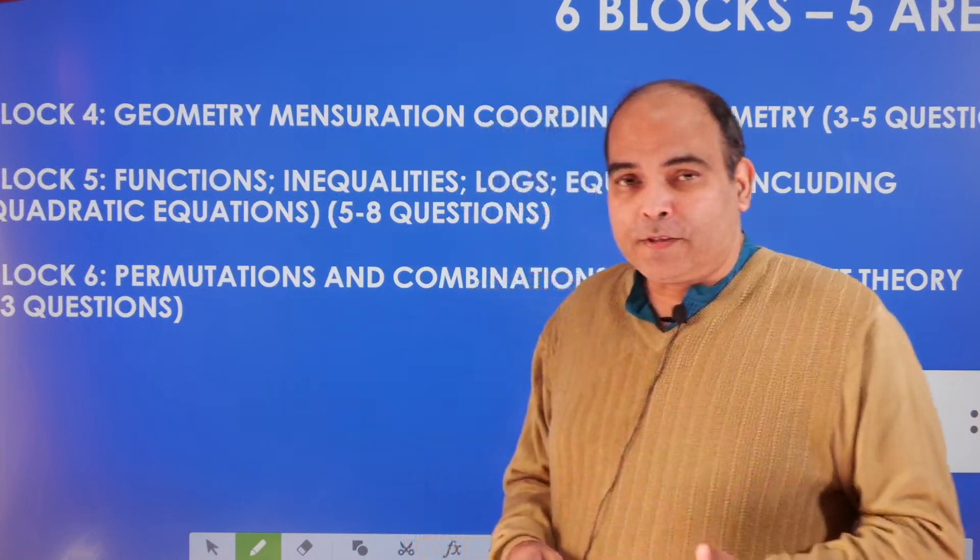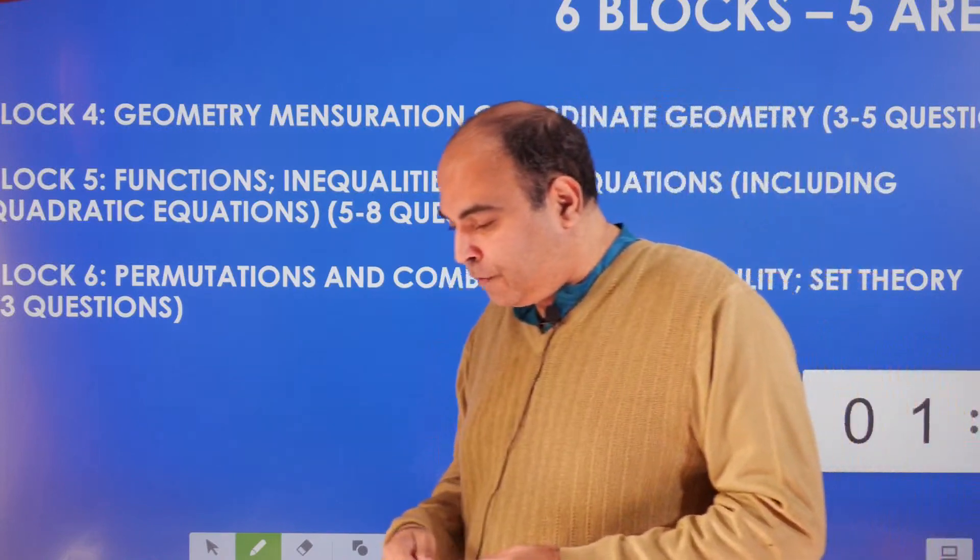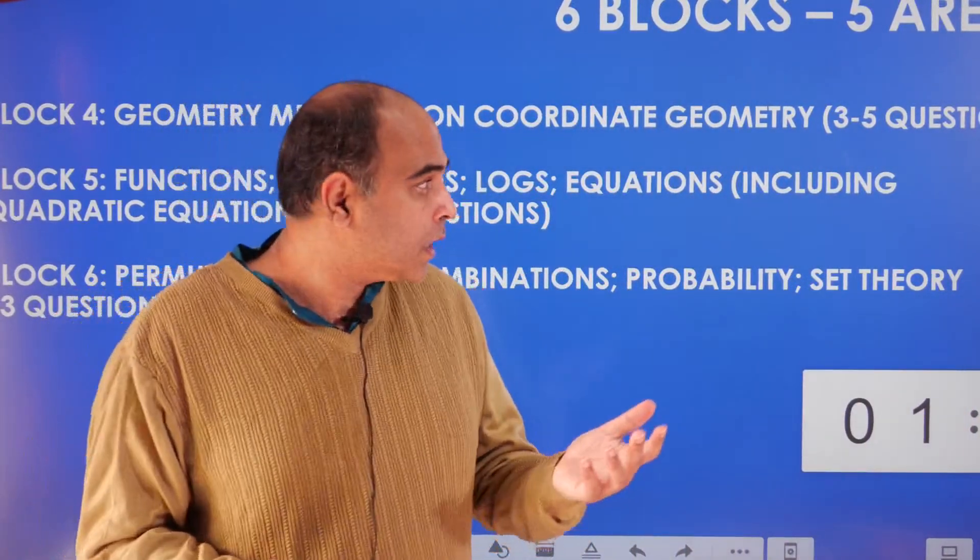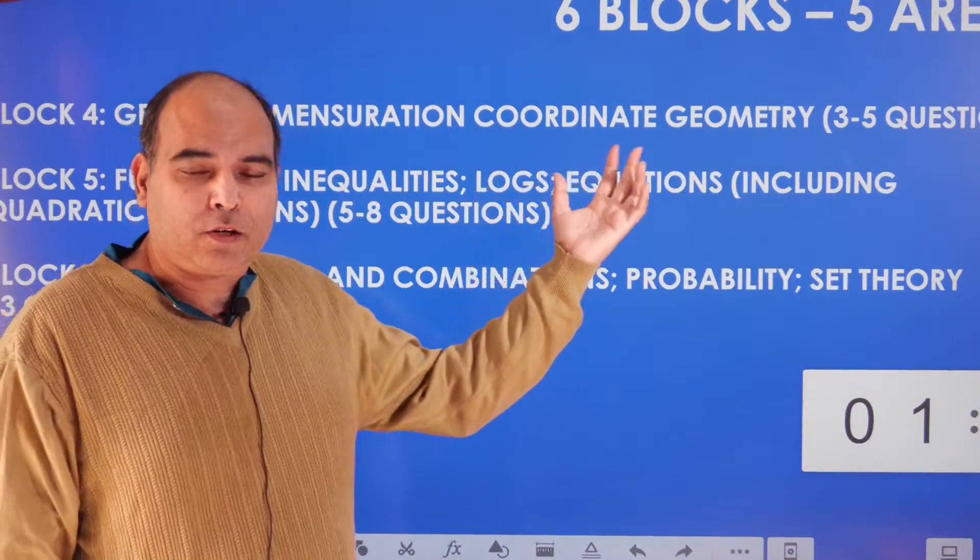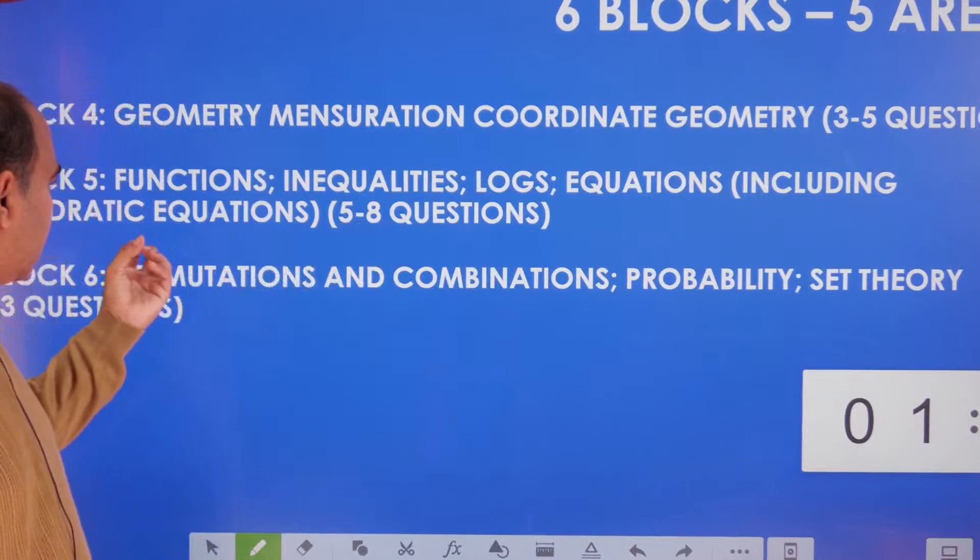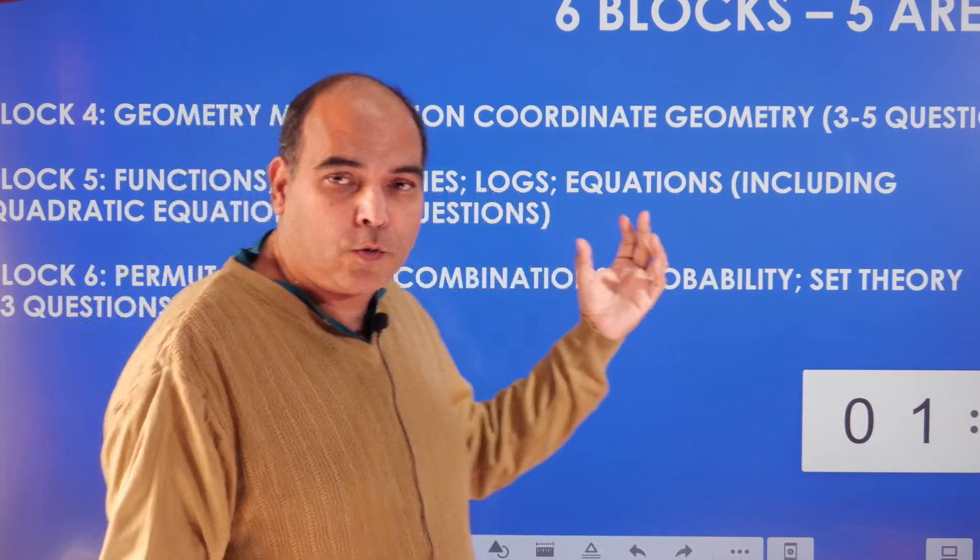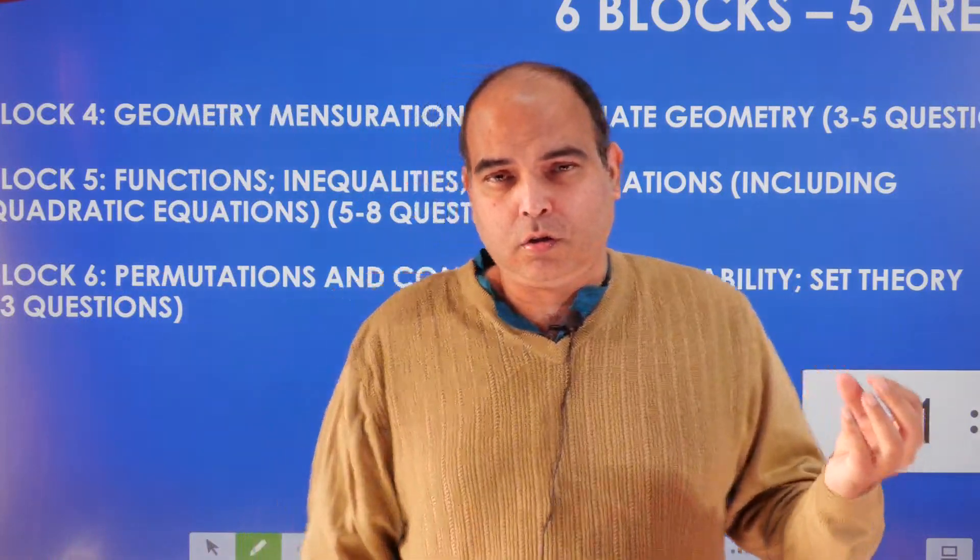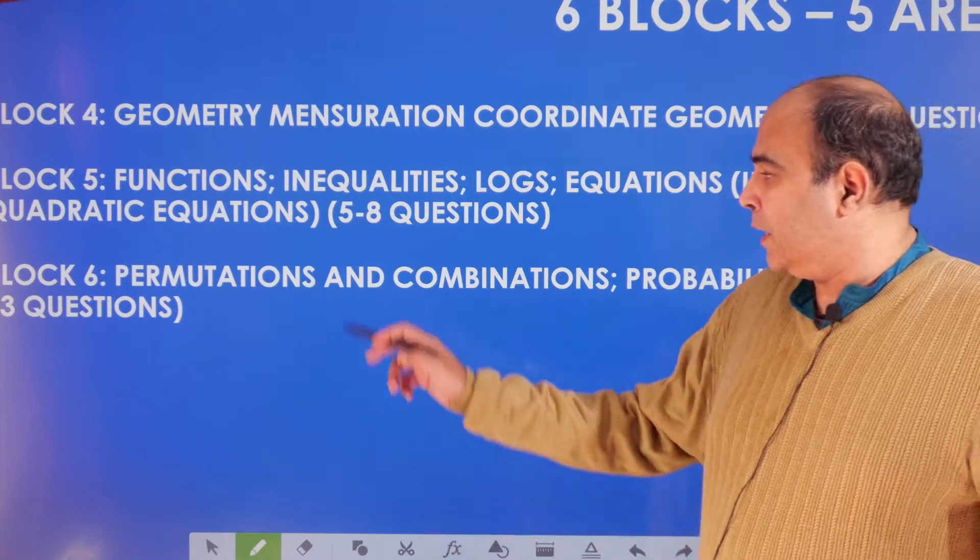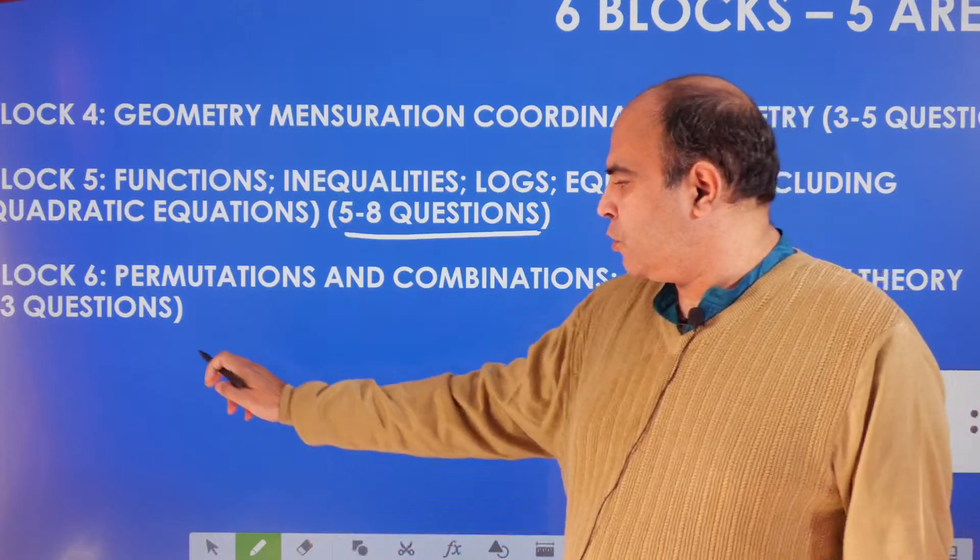Then you come to Block 4, 5, 6. Block 4 is geometry, mensuration, coordinate geometry—you'll get between three to five questions. I'm talking about a 22-question exam like CAT 21. Block 5, the second most important area of CAT quants, includes functions, inequalities, logs, and equations. You'll get around five to eight questions from these four areas.